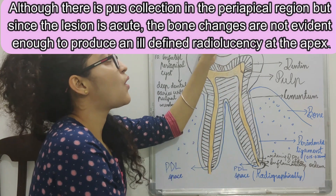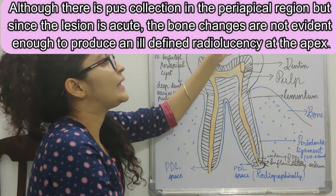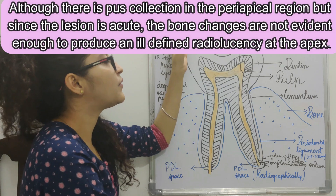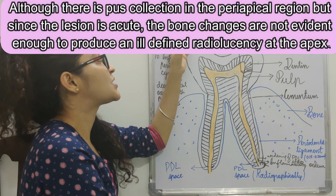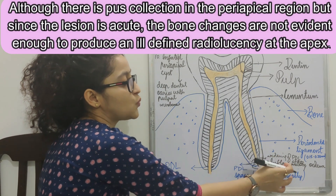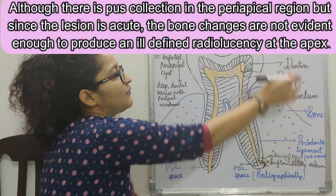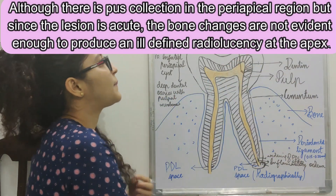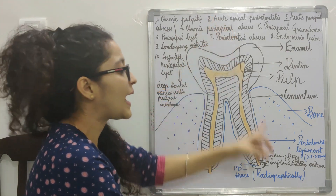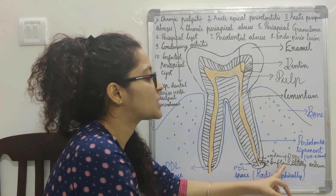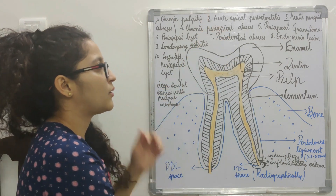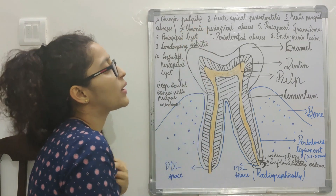The final diagnosis depends on your clinical findings. If the patient presents with fever or vestibular obliteration and you see widening of periodontal ligament space with or without loss of lamina dura, the final diagnosis is acute periapical abscess. Whereas if clinically you see only tenderness on percussion and radiographically you see widening of periodontal ligament space with or without loss of lamina dura, the final diagnosis becomes acute apical periodontitis.